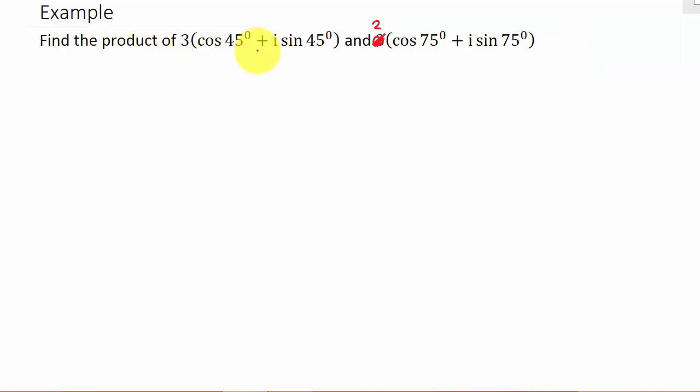Alright, so here we go. So remember, to multiply these two together, I've got 3(cos 45° + i sin 45°). It's going to be this times this one, 2(cos 75° + i sin 75°).